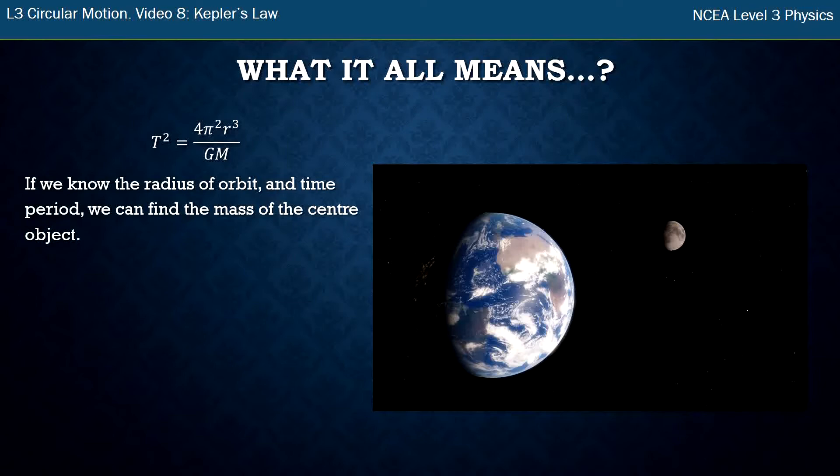This is a pretty clever technique. As long as we've got one thing orbiting another and we can count how much time it takes and know the radius, we can calculate the mass of the thing in the middle. This is how we know the mass of the earth and the sun. We know the earth-sun radius and the 365-day orbit, so we can use this formula to work out the mass of the sun.